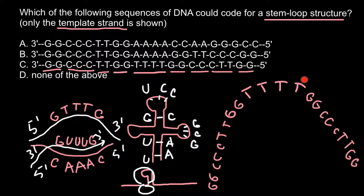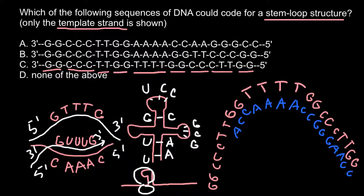We have the template strand here, but if you wish you can build the complementary mRNA. So we would have adenine, adenine, adenine, adenine for the loop region; then cytosine, cytosine, guanine, guanine, guanine, adenine, adenine, cytosine, cytosine; and cytosine, cytosine, adenine, adenine, guanine, guanine, guanine, cytosine, cytosine. As you can see, this mRNA still wouldn't base pair with itself, confirming we don't need to transcribe each DNA sequence into mRNA to determine if it will make a stem loop structure.